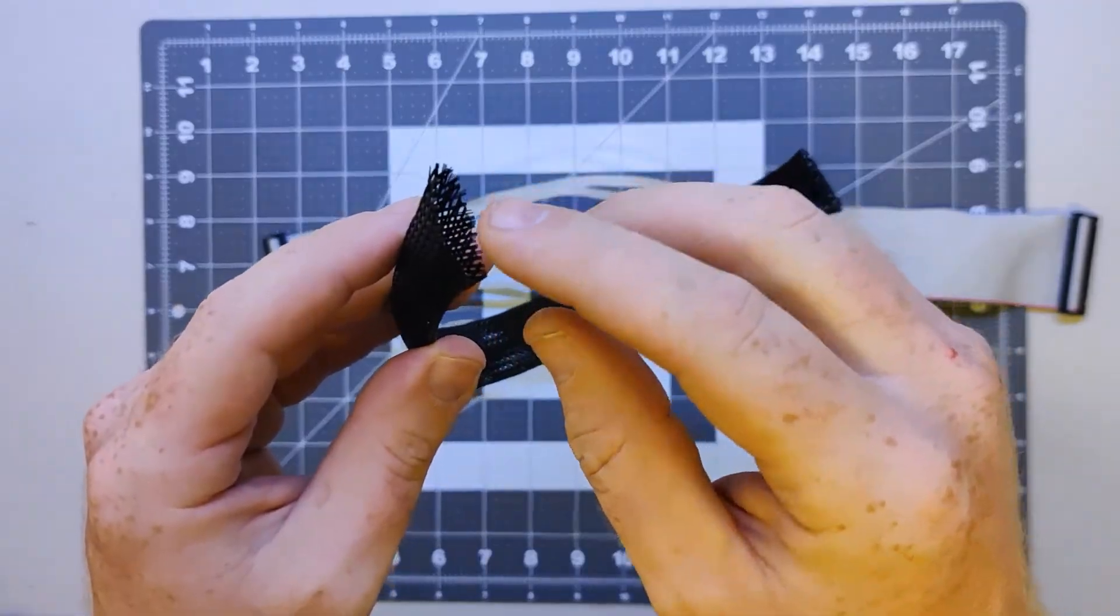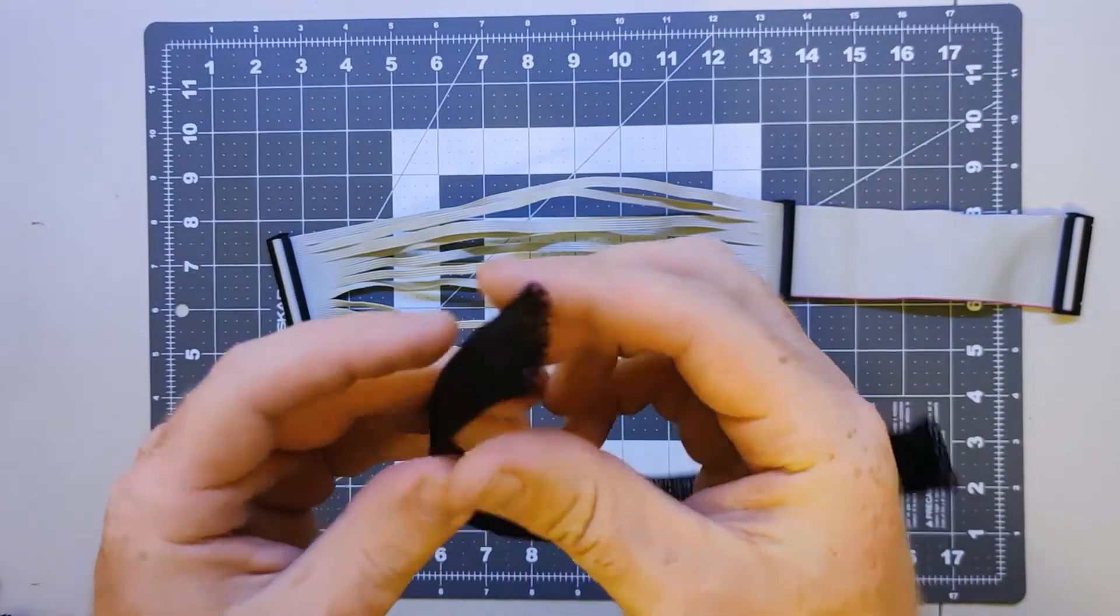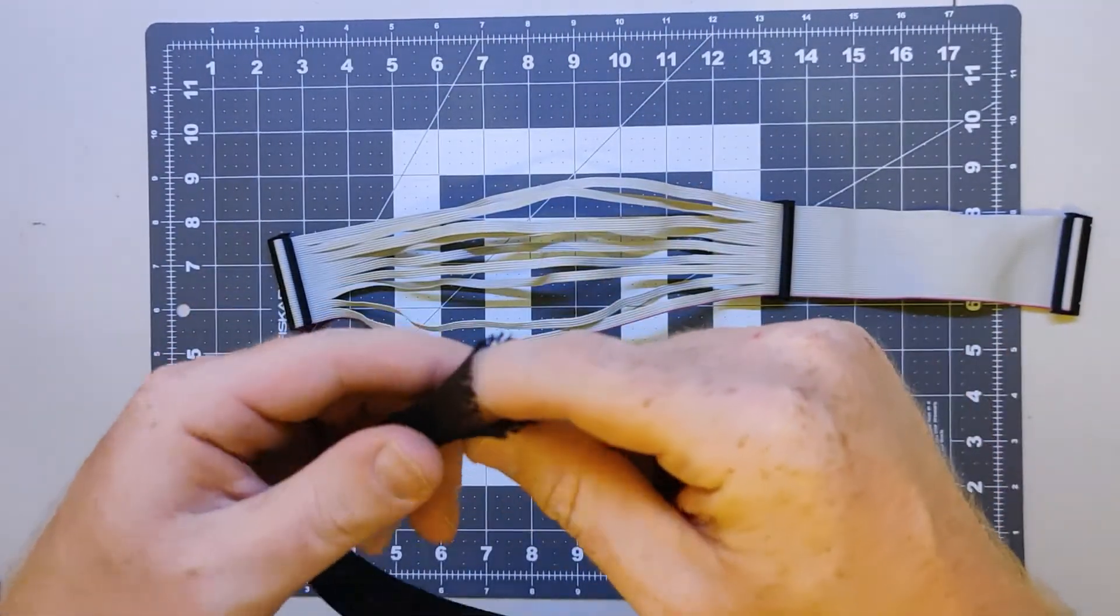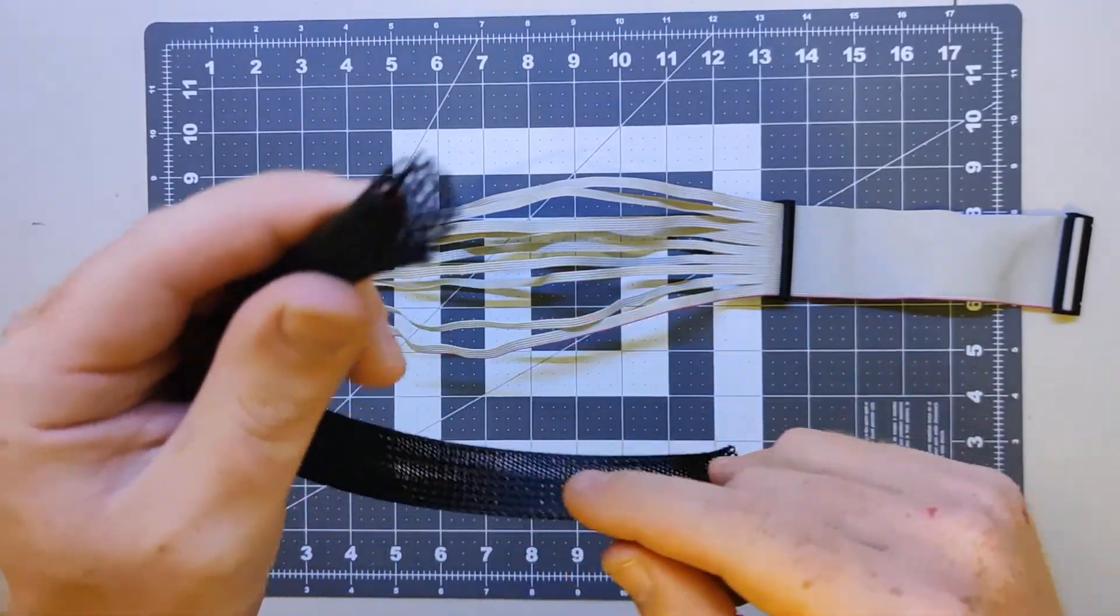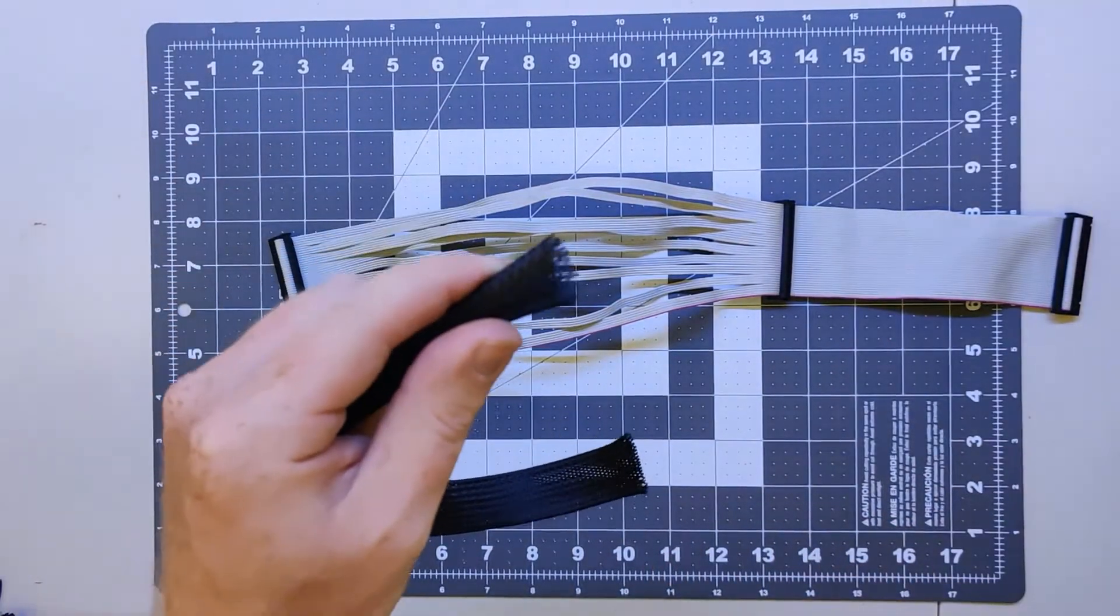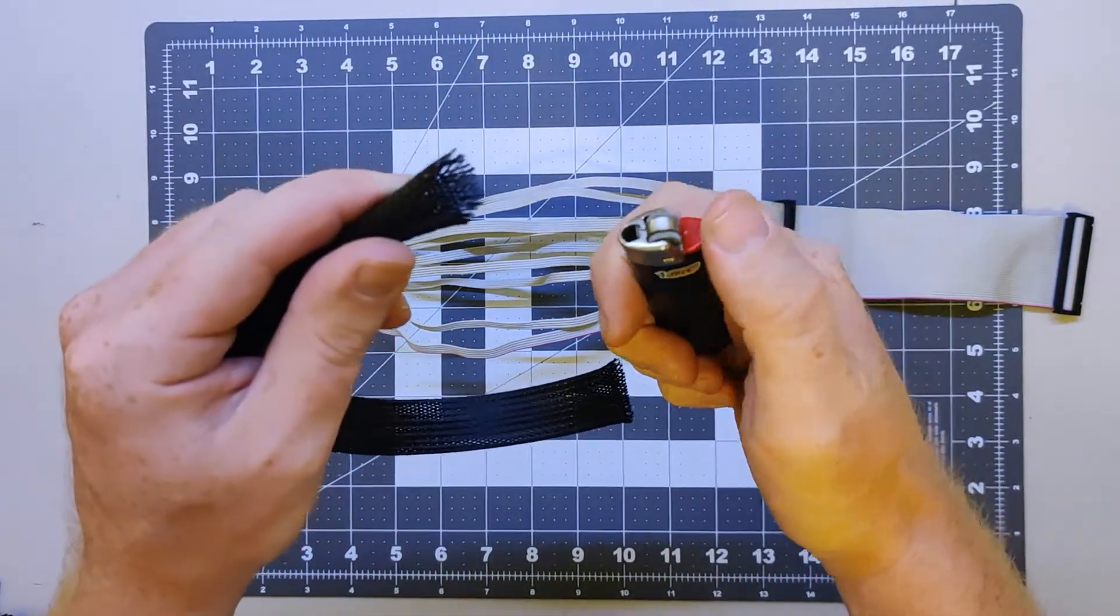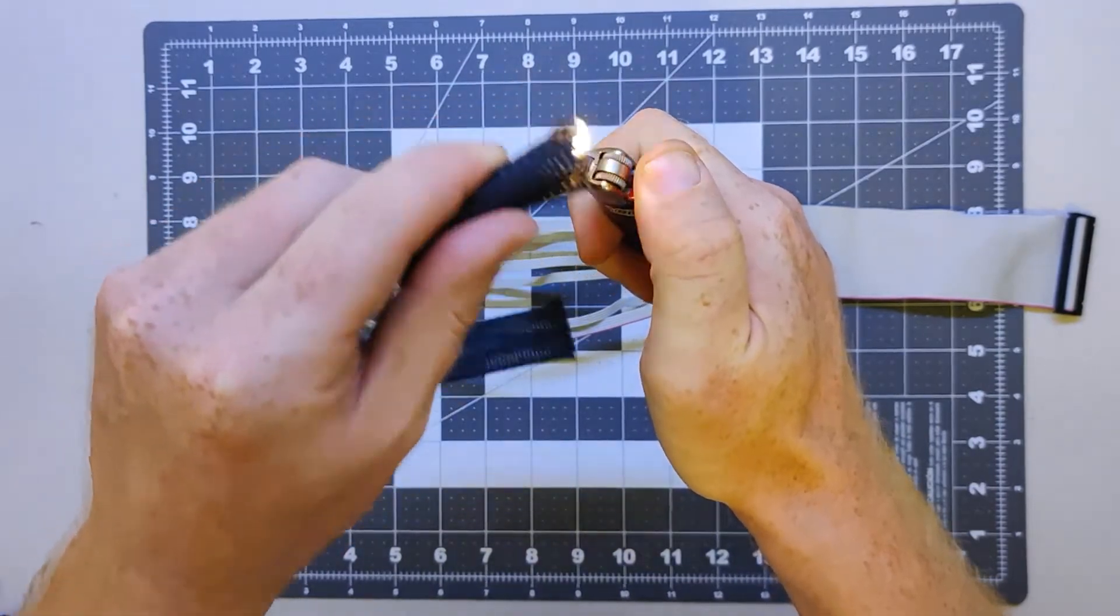This type of sheathing expands when it is made shorter, and the ends will fray and separate, making it messy and difficult to work with. A trick to avoid this is to take a lighter or directed heat source and briefly heat the ends when they are at rest. This will cause the nylon threads to melt together and keep them from fraying out while working.